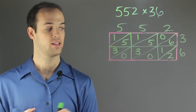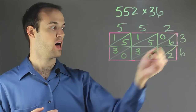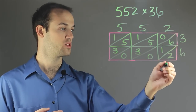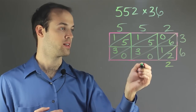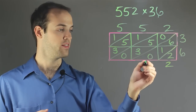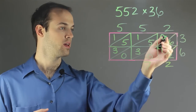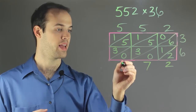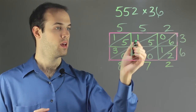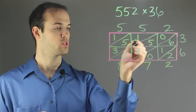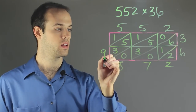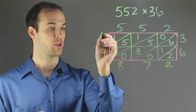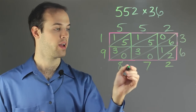Now we're going to add up all the digits according to the diagonal lines. In this diagonal section we have just the 2, so I'm going to write the 2 down here. In this row I've got 6 plus 1 plus 0, which is 7. In this row I have 0 plus 5 plus 3 plus 0, that's 8. In this row I'm going to have 5 plus 3 plus 1, which is 9. And in this row, just the lone 1. So my answer can be read as 1, 9, 8, 7, 2.